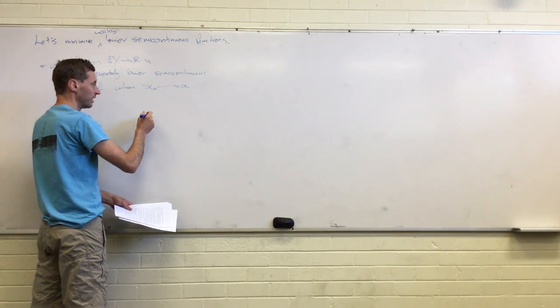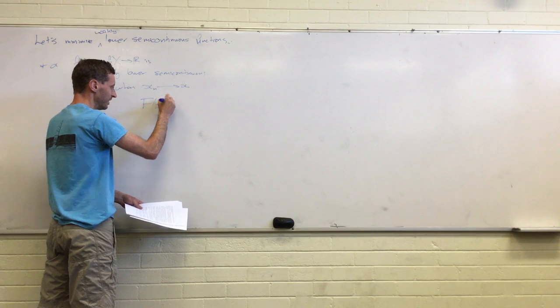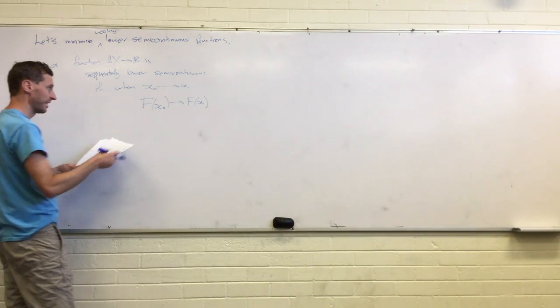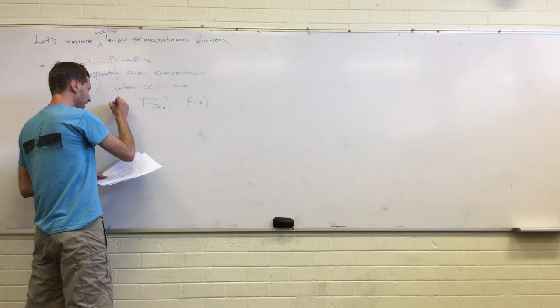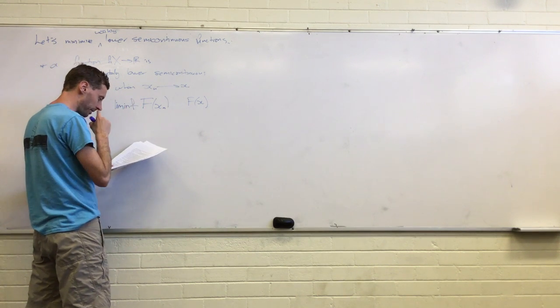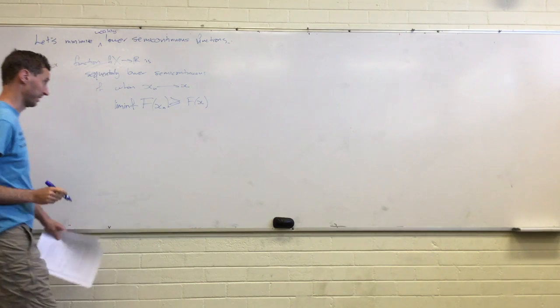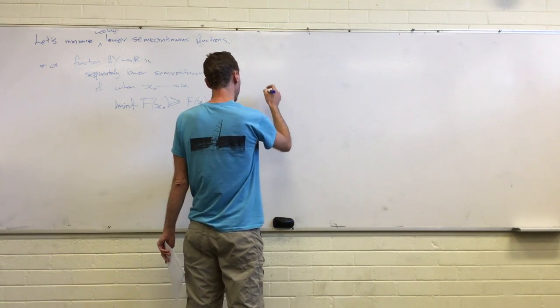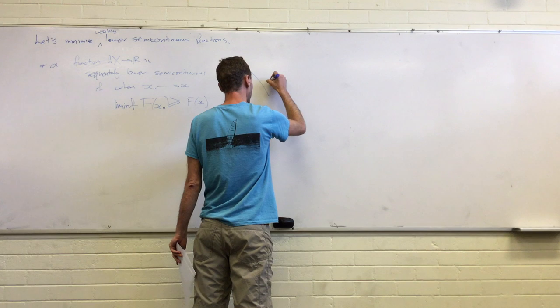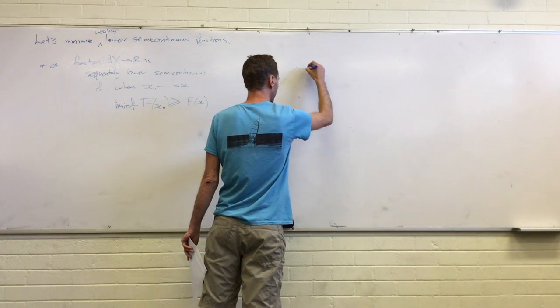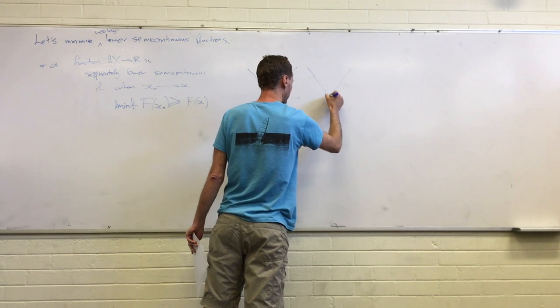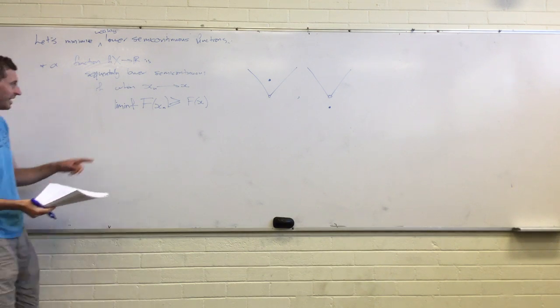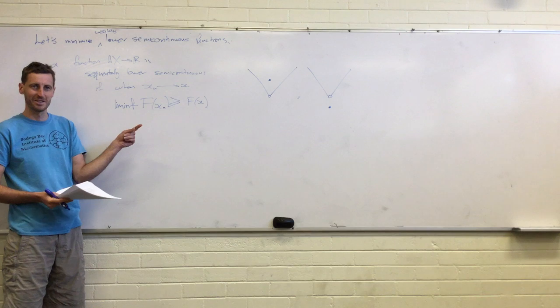We're not looking for this anymore. The thing that we're looking for is just that the limit inferior of the images of those guys is greater than or equal to the image of the limit. So we definitely deserve a picture in order to understand that. So, let's consider these functions. One takes the value zero everywhere except at zero where it takes the value infinity. Which one of these is sequentially lower semi-continuous?